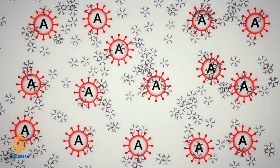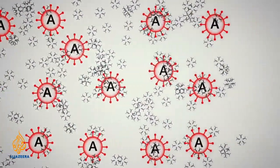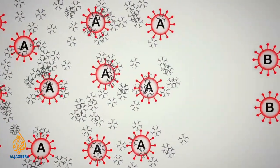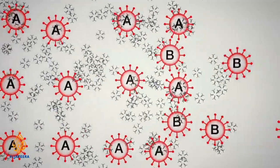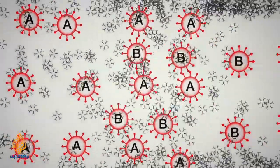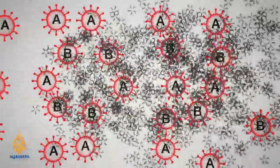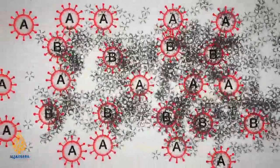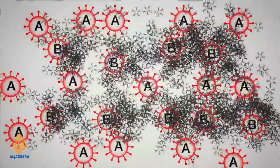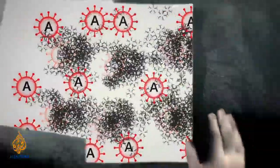For example, if a person with antigen A on their blood cells is given a transfusion of antigen B blood cells, antibodies in their blood plasma will destroy the donated blood cells, triggering a dangerous reaction.